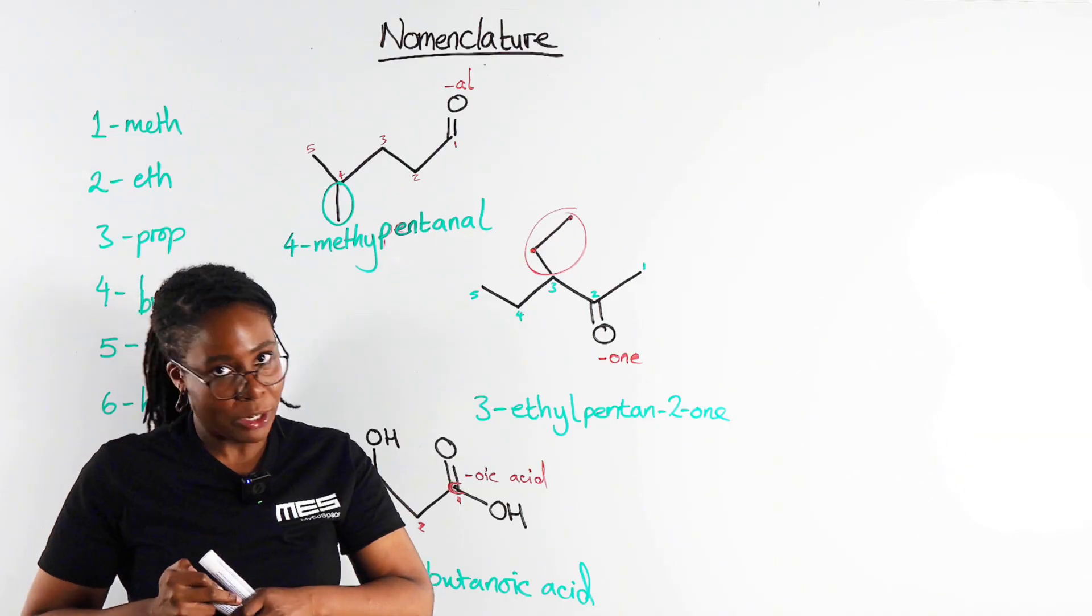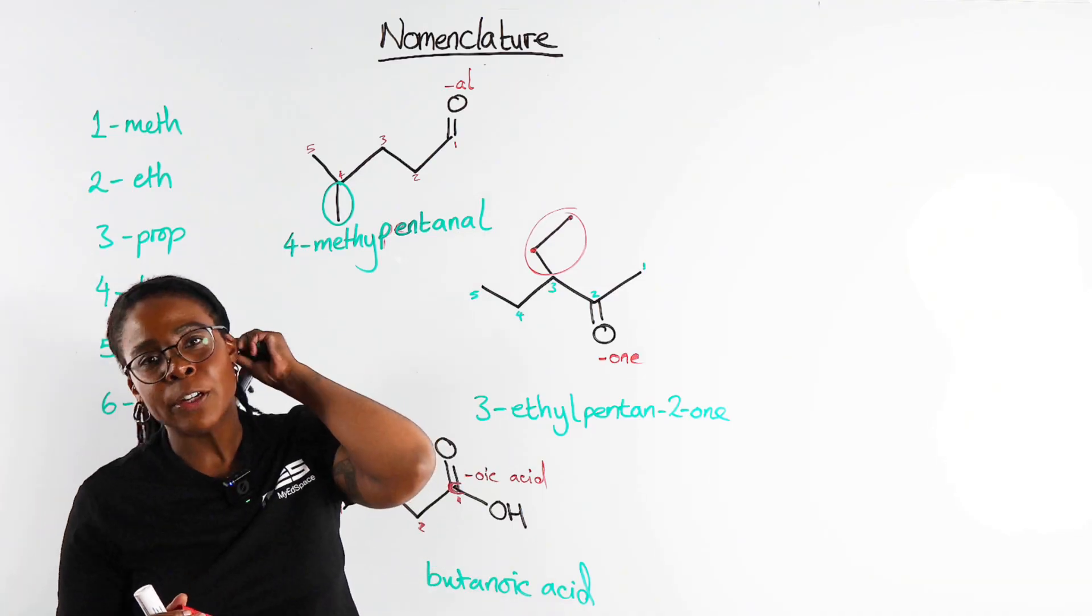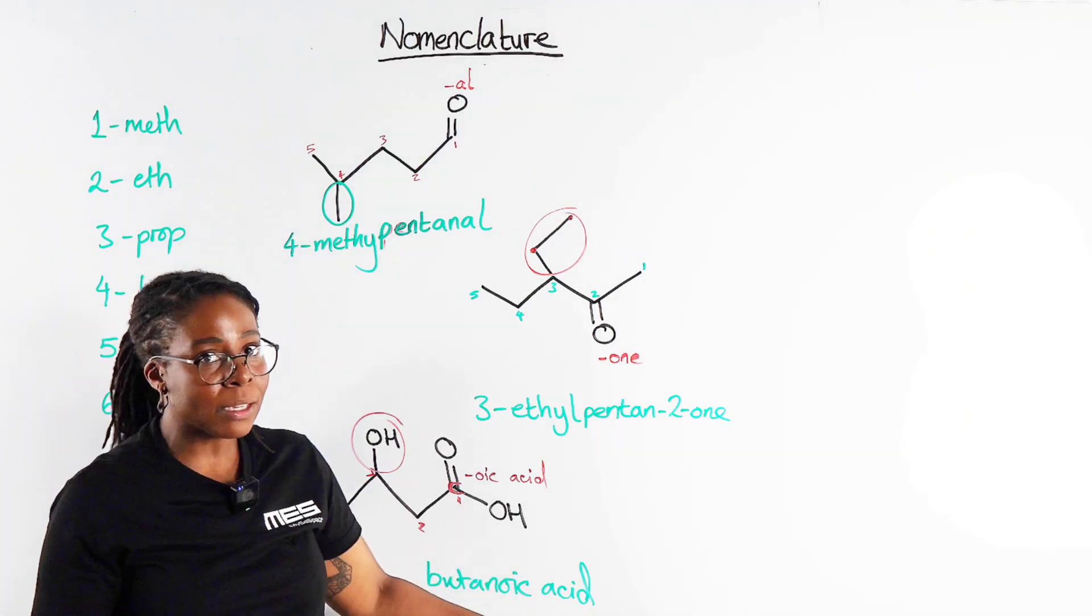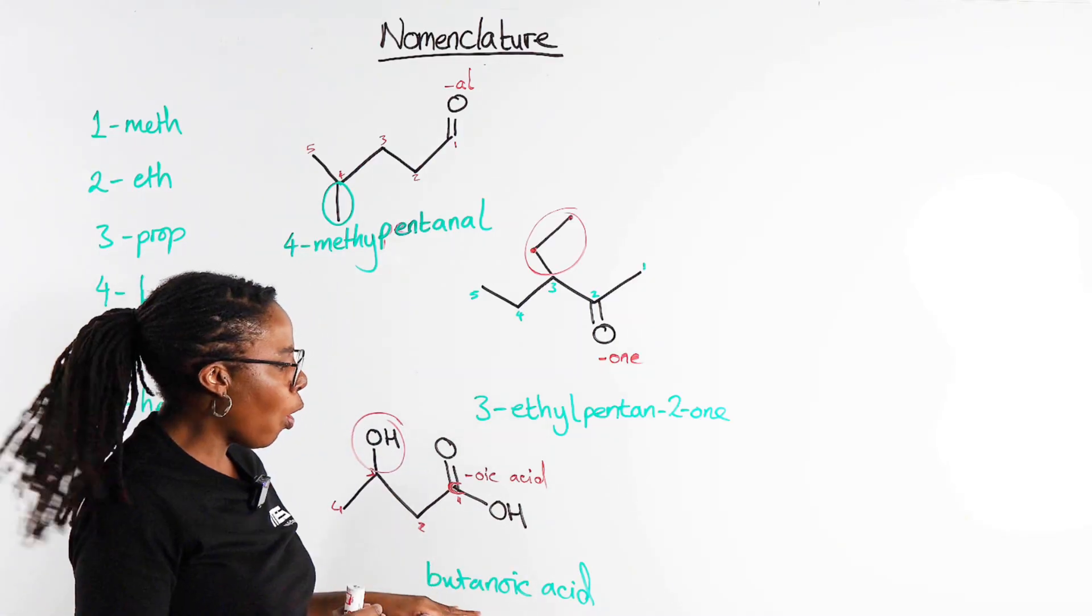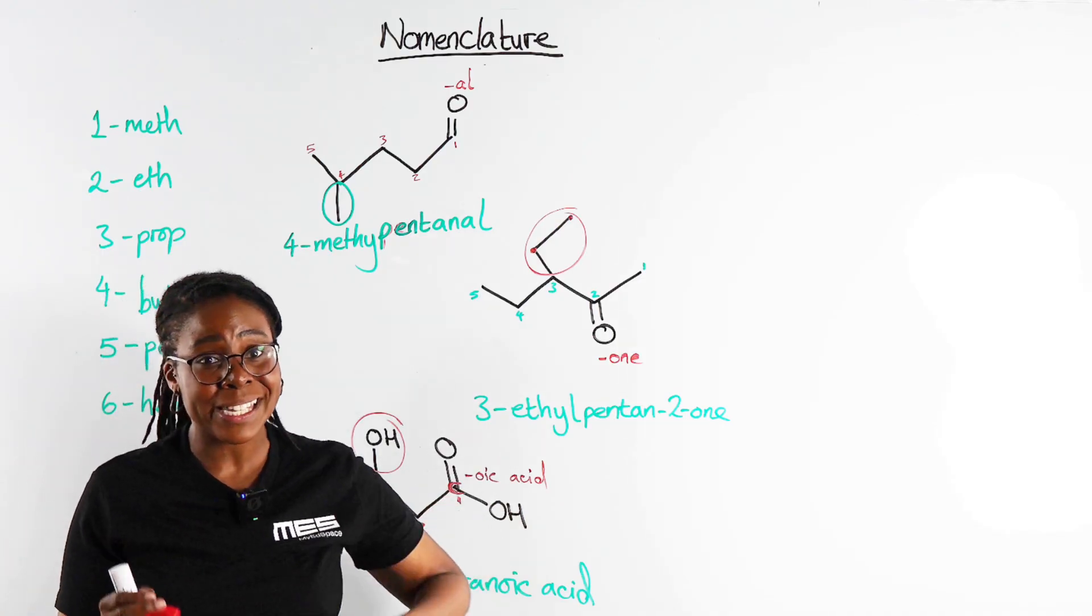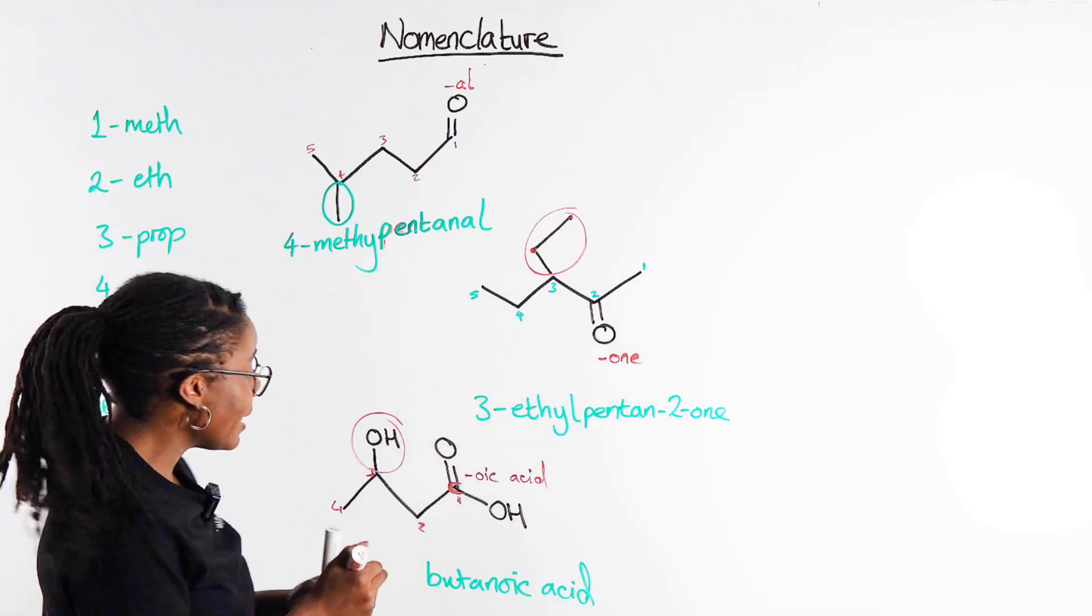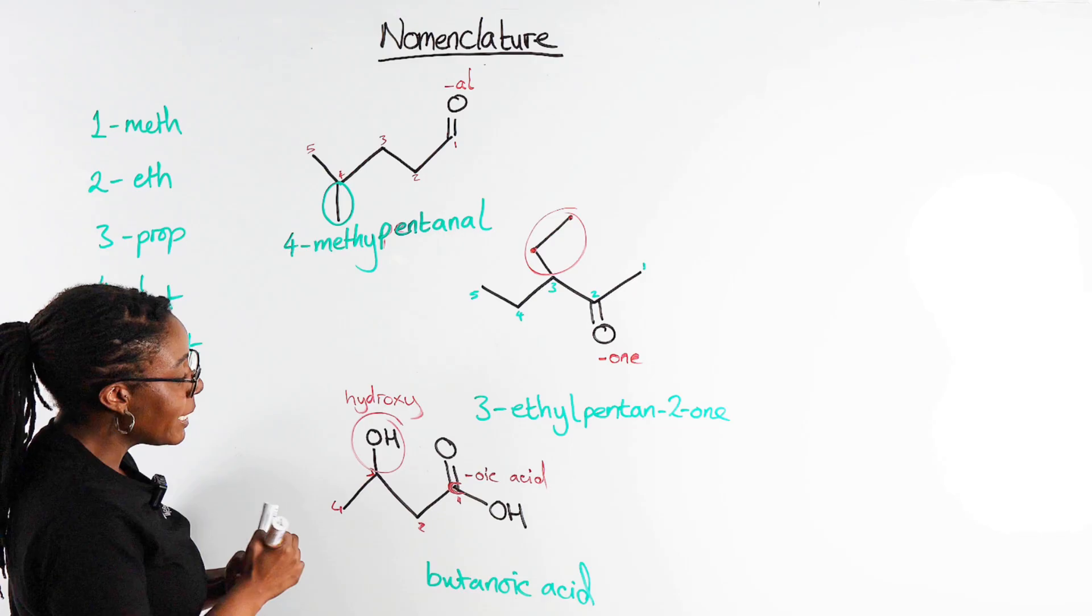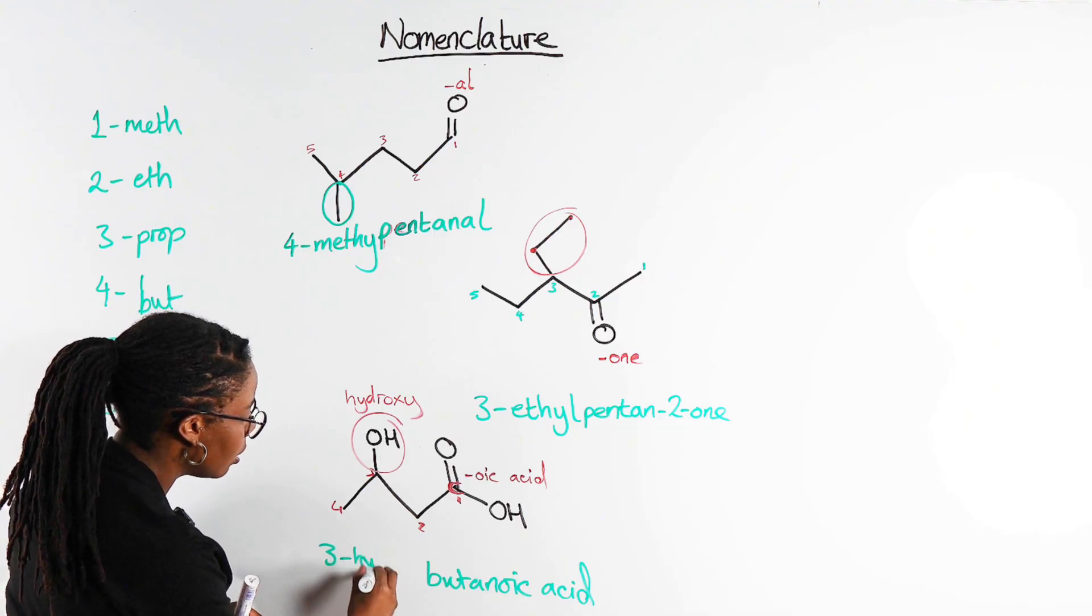Now we have something else going on here. We have got this OH group. Now we would be used to, and we saw in a previous example, that this is our alcohol so would usually give us the ending -ol. But the end of the name is already taken, right, the end of the name is oic acid. So it's not going to be butanoic acid -ol or butanol oic acid. Instead, because our carboxylic acid has the higher priority and is taking the end of the name, the OH group is kind of relegated to being now a prefix, and when it's a prefix instead of being -ol it becomes hydroxy. So now completing this name with our hydroxy group of course on carbon number three based on our numbering from earlier, this is 3-hydroxybutanoic acid.